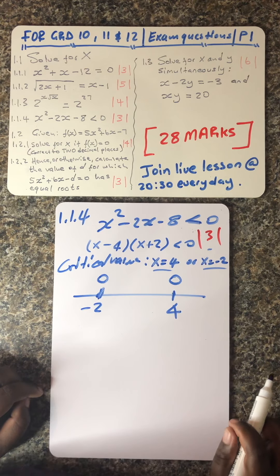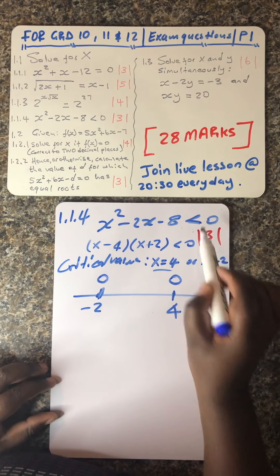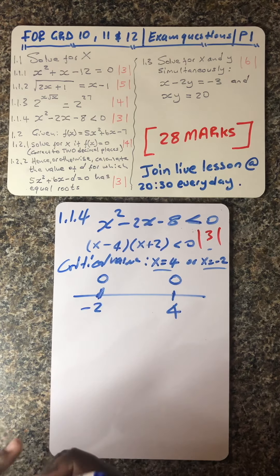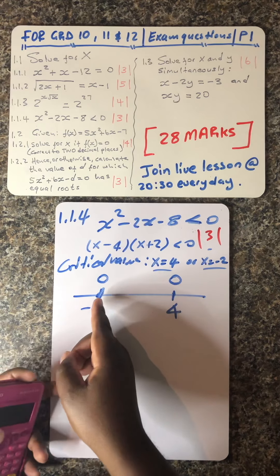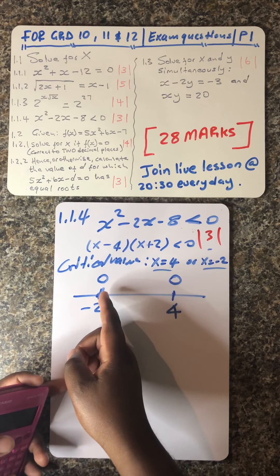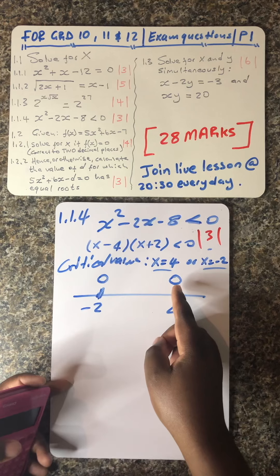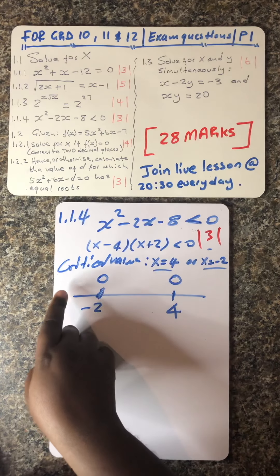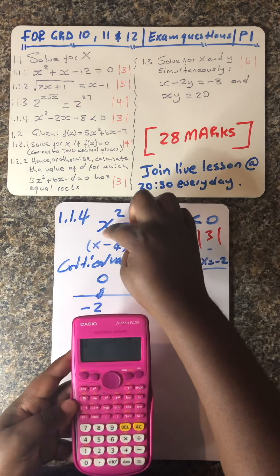This is where you need to use your calculator. The question is: for which values of x will all of this be less than 0? We know a number which is less than 0 is a negative number. So let's pull out our calculator and do this exercise. We're going to check for values from negative 2 going in that direction, the values in between, and the values greater than 4. Let's first start with maybe negative 5 — in place of x, we substitute negative 5.